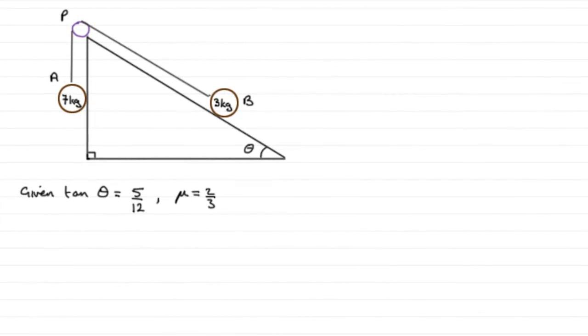Now, in this particular problem, what I've done is sketch what we're given, and we're told that the tan of the angle theta equals 5/12, so the coefficient of friction for this rough plane that B is on is 2/3. And we've got to find the acceleration of B then as it moves up the plane from rest.